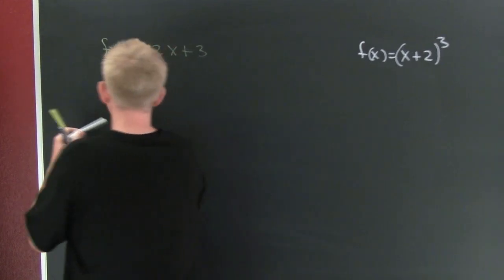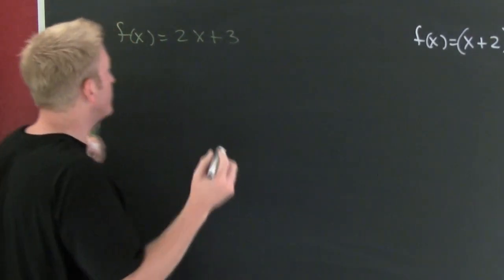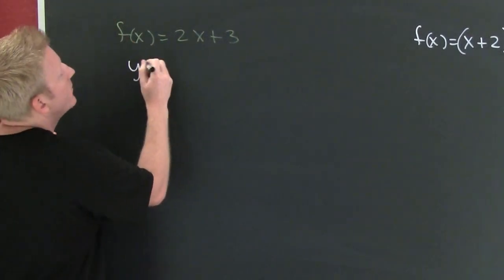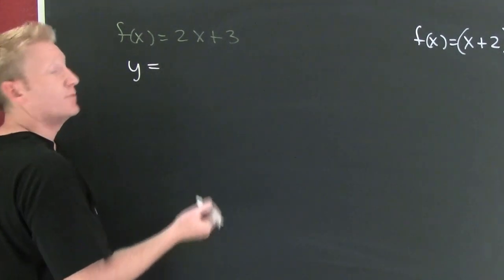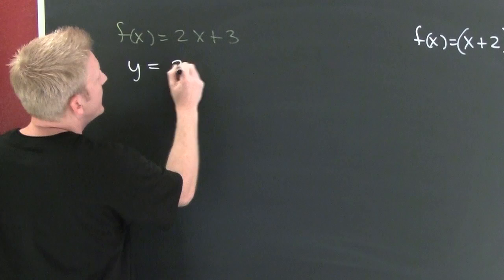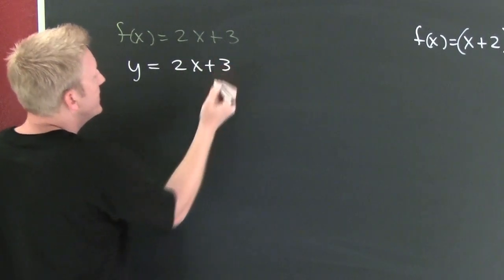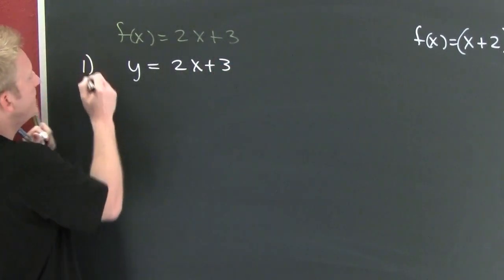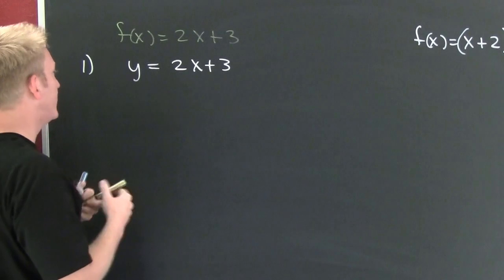Let's do a couple of examples. First thing I'm going to do is I'm going to replace f of x with y so that it's easy to work with with our algebra functions. And then you're going to have 2x plus 3. That was step one.